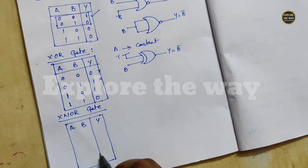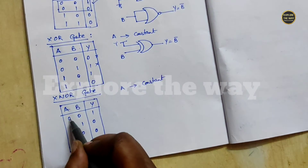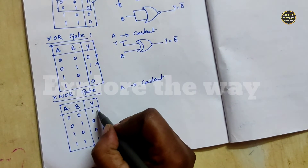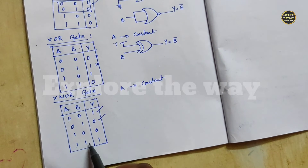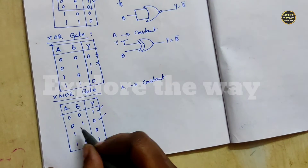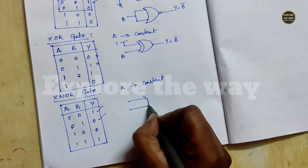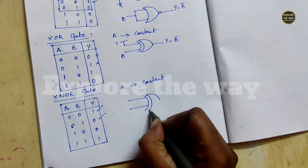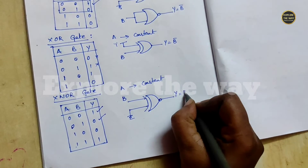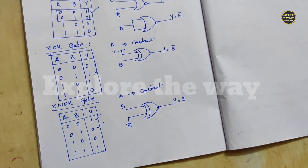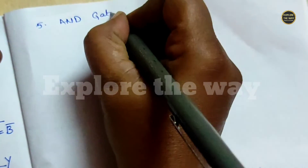Next, the XNOR gate. Make one of the inputs constant. When A is equal to 0, the output is the complement of the second input. When A is equal to 1, the output is the same as the second input. So we use the A equal to 0 combination — one input is 0, then output is complement of the second input.